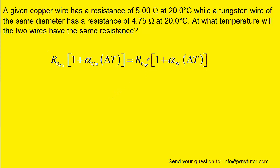What we're going to do first, since we have a multiplication of R zero tungsten, we're going to divide both sides of the equation by that term. So we'll do that on the right and we'll do that on the left as well.